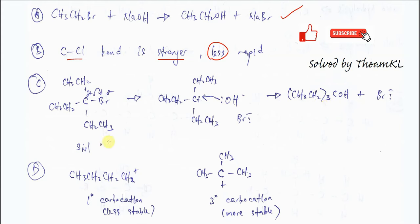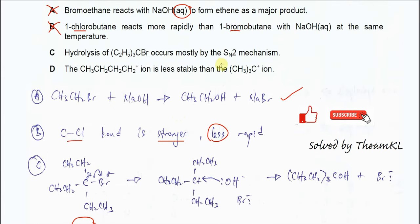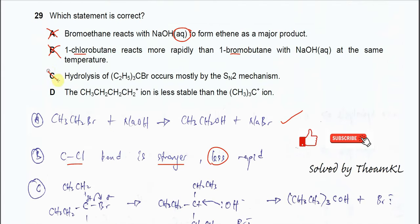This substitution is SN1 mechanism. It's SN1 because the first step, which is the slowest step, just involves one species which is the tertiary haloalkane. Therefore it must be SN1, not SN2. So C is also incorrect.